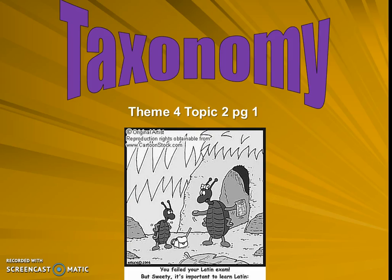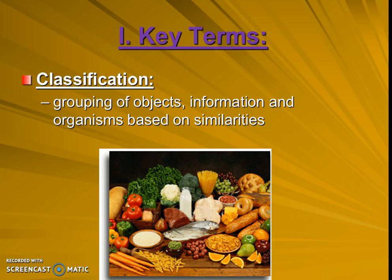Hello biology students. Today we're going to be talking about taxonomy. We are in our new topic but still in theme four. This is page one. So when we talk about taxonomy, or how to name things, this is all about classification — how we classify groups of objects, information, or organisms based on similarities.